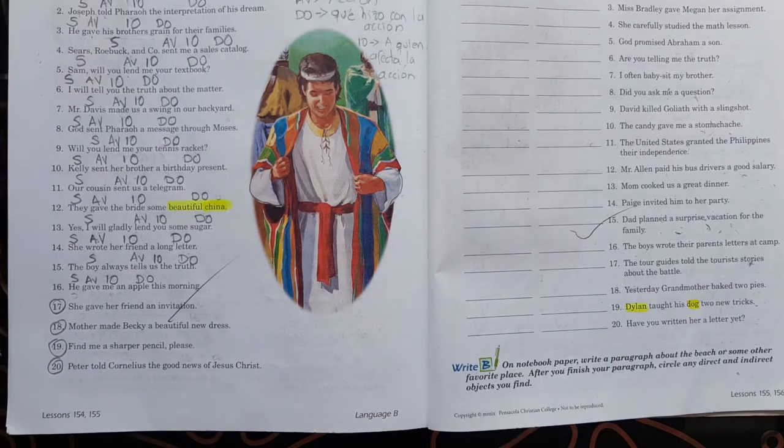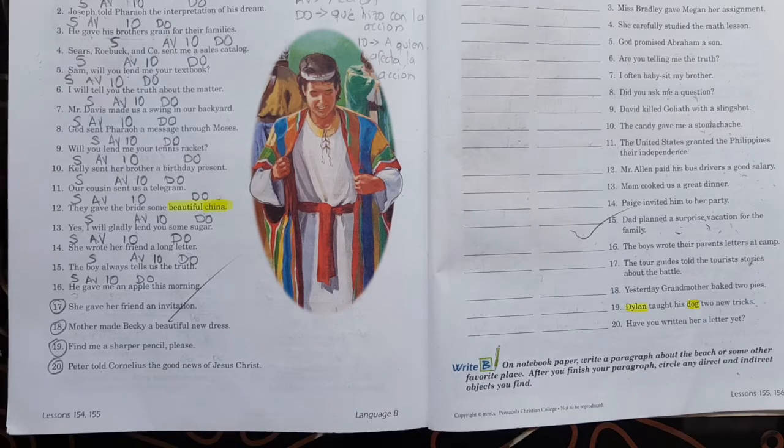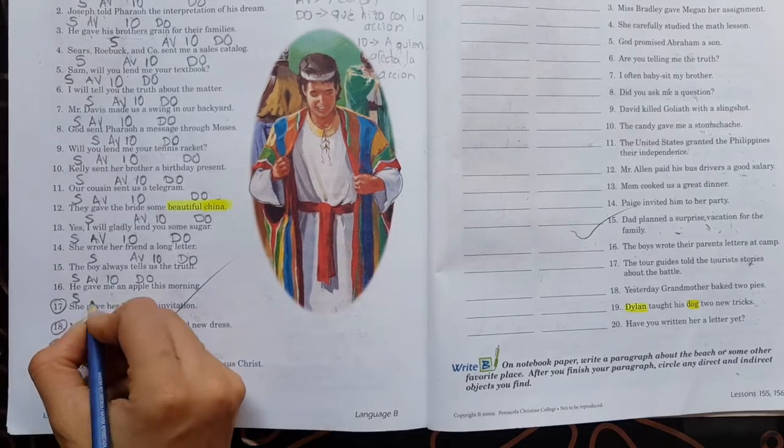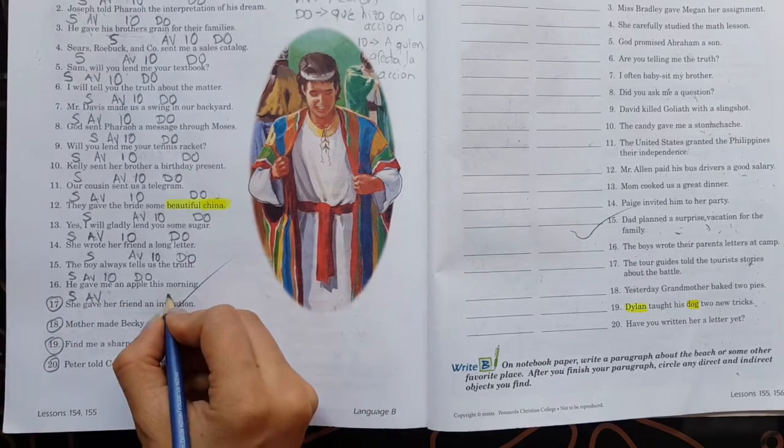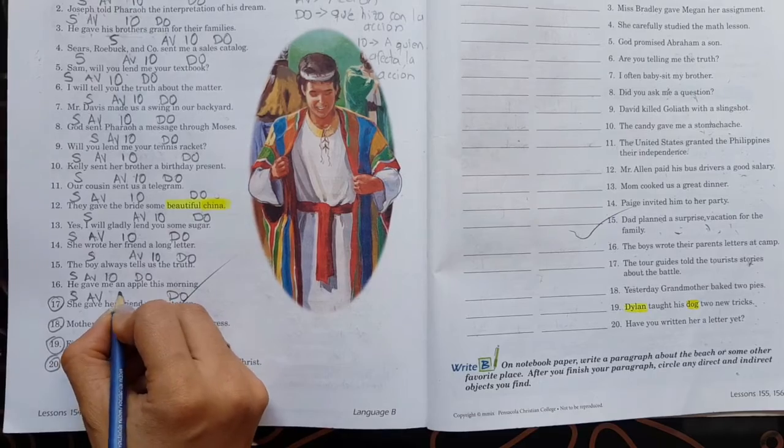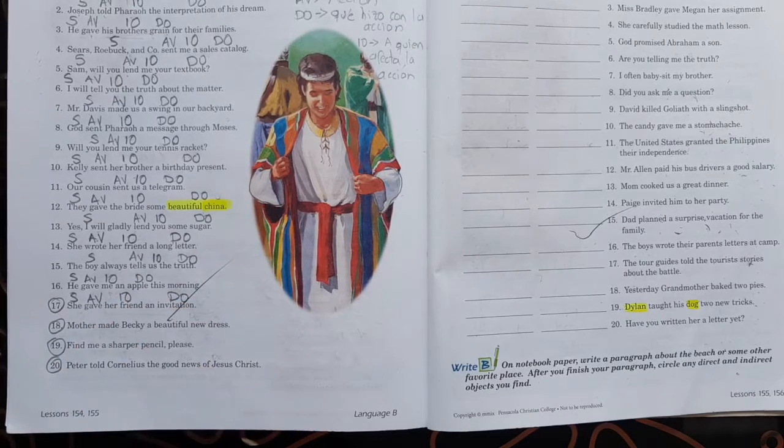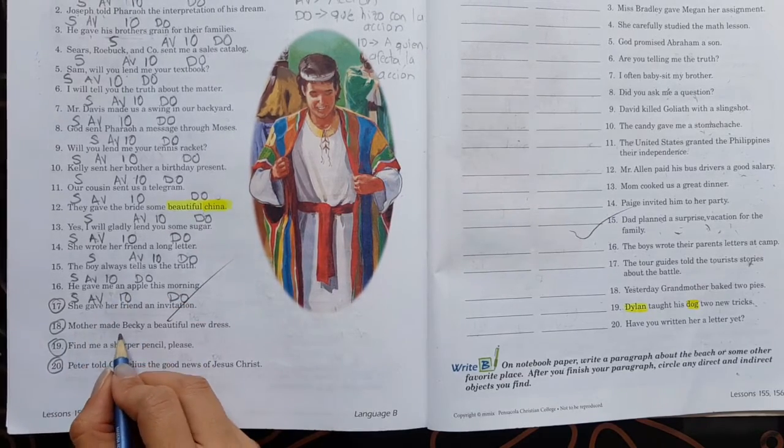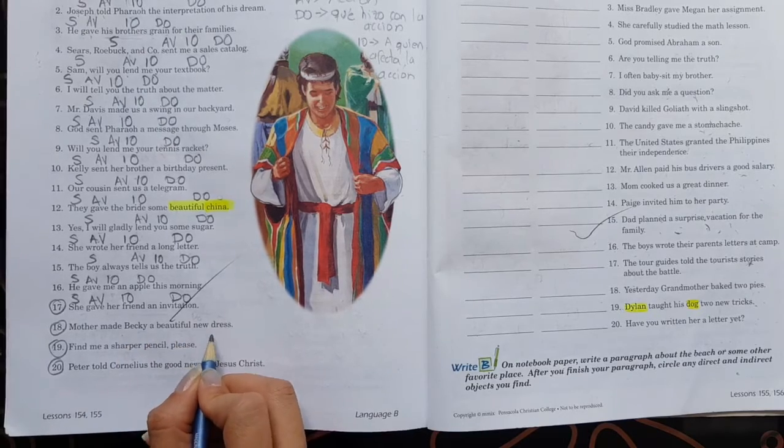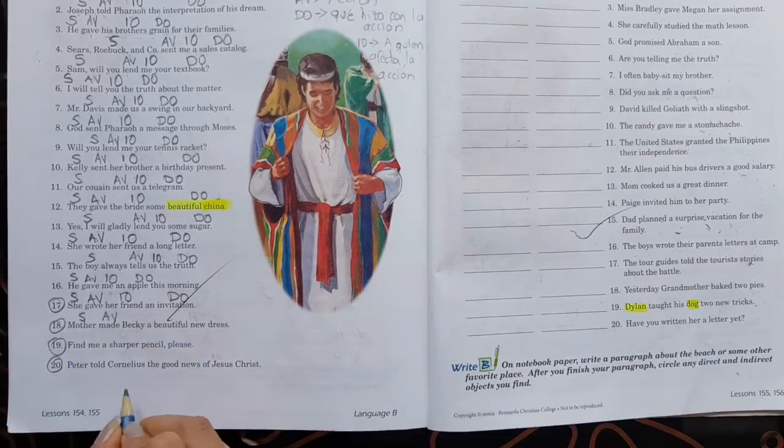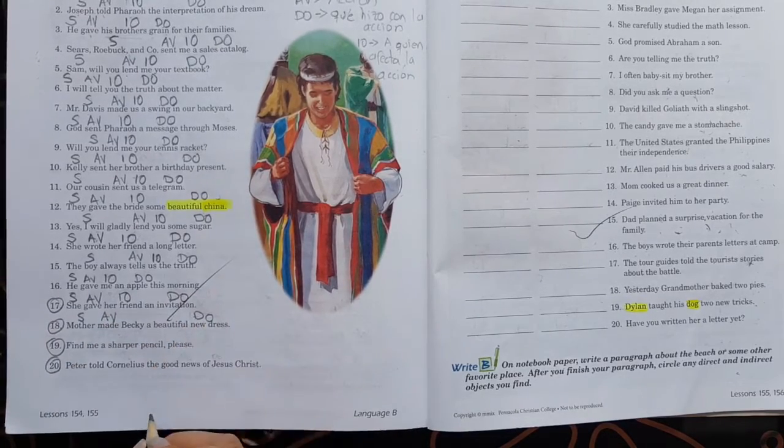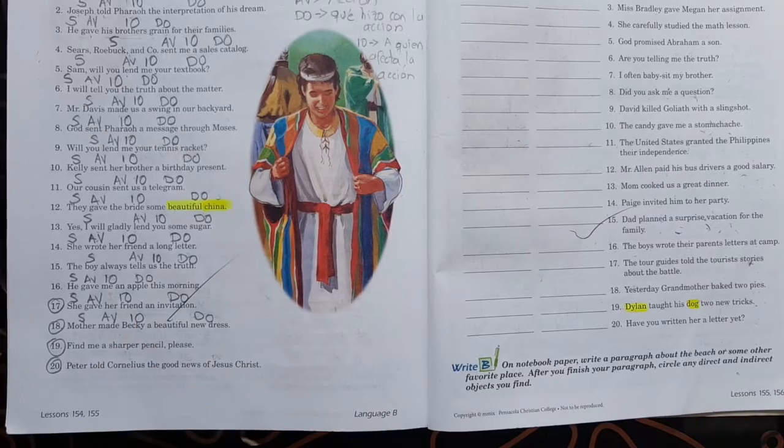Ahora ustedes hacen el diecisiete, dieciocho, diecinueve y veinte. Rápidamente, mis amores, haciendo estos. Dos minuticos, que no. Eso no demora demasiado. Listo. ¿Cómo vamos, hijitos? Rápidamente, para hacer diecisiete, dieciocho, diecinueve y veinte. Recuerda que tienes que identificar sujeto, action verb, una acción, algo que se hace. Action verb, objeto directo y objeto indirecto.